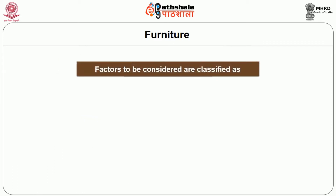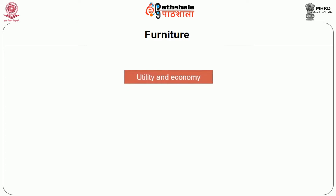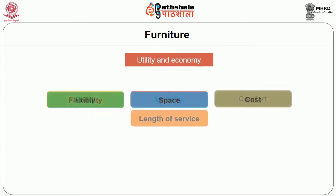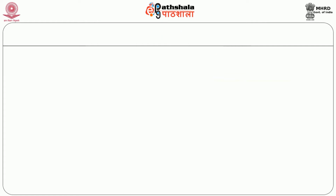Factors to consider while selecting furniture can be classified under three broad headings: utility and economy, beauty and character, and construction. Under utility and economy, the major aspects include utility, mobility, comfort, flexibility, space, cost, and length of service.